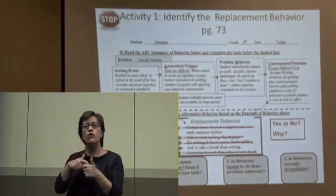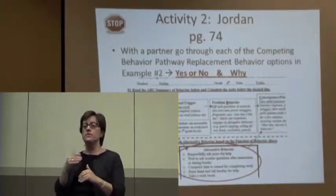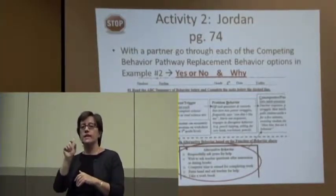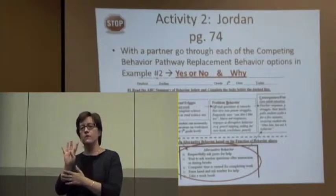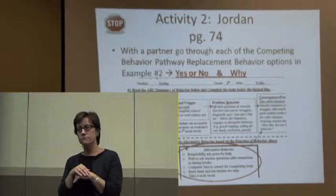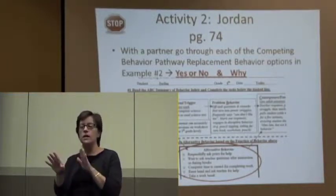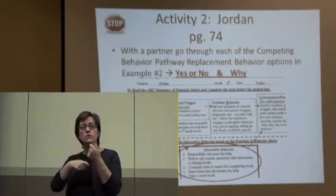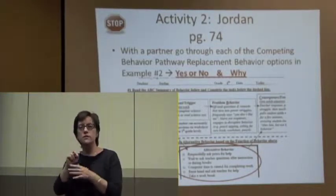Okay, so let's look at Jordan now. She's on page 74. Go ahead and just choose the best replacement behavior for Jordan using those three rules.